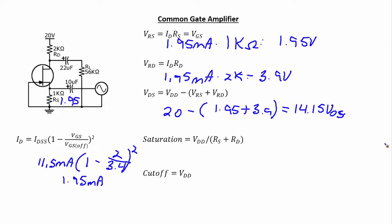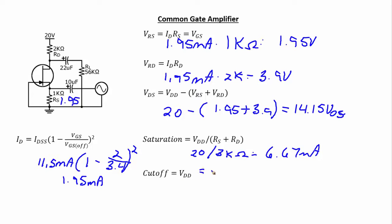To find the DC load line, it's the same approach as with transistors — we use VDD = 20 V divided by the sum of RS and RD, which is 1 kΩ + 2 kΩ = 3 kΩ total. That gives a saturation current of 6.67 mA. The DC voltage can't exceed VDD, so the cutoff value is 20 V. Now let's look at this from the AC signal standpoint.